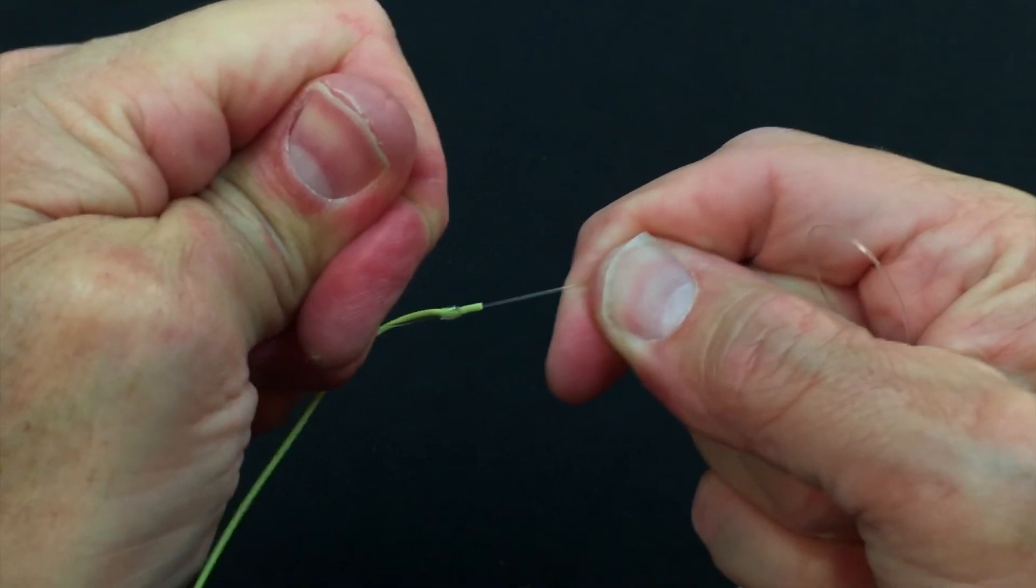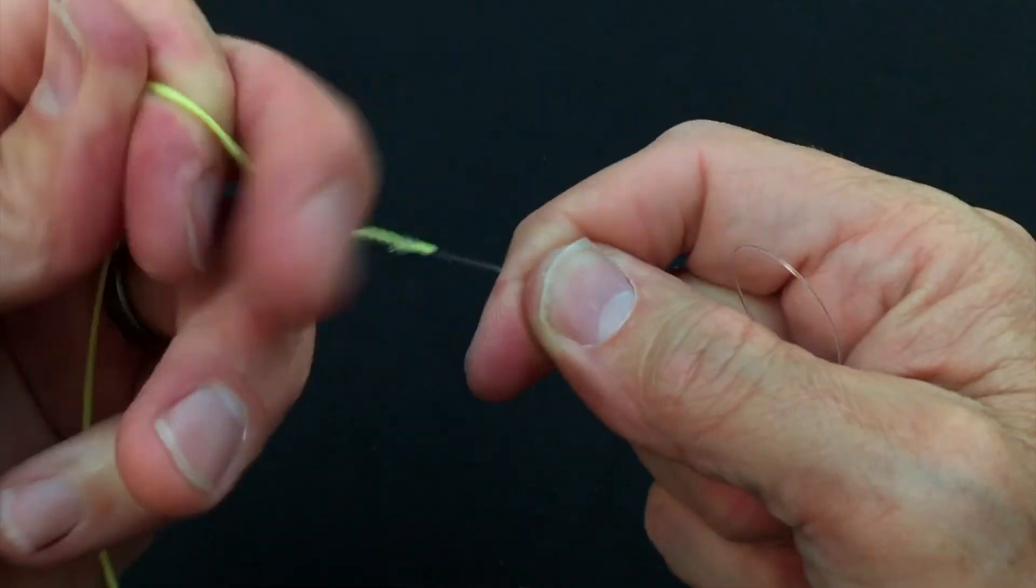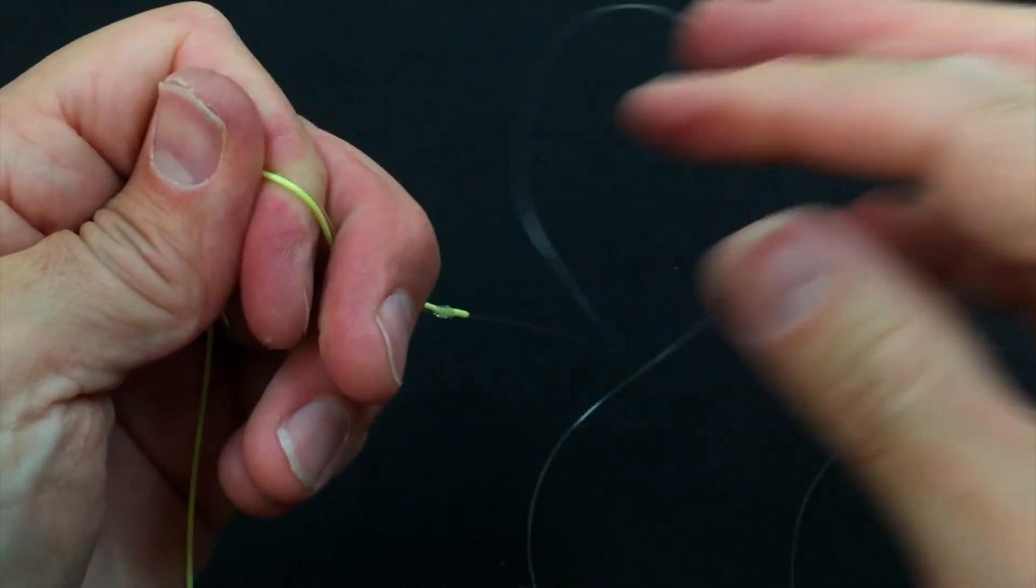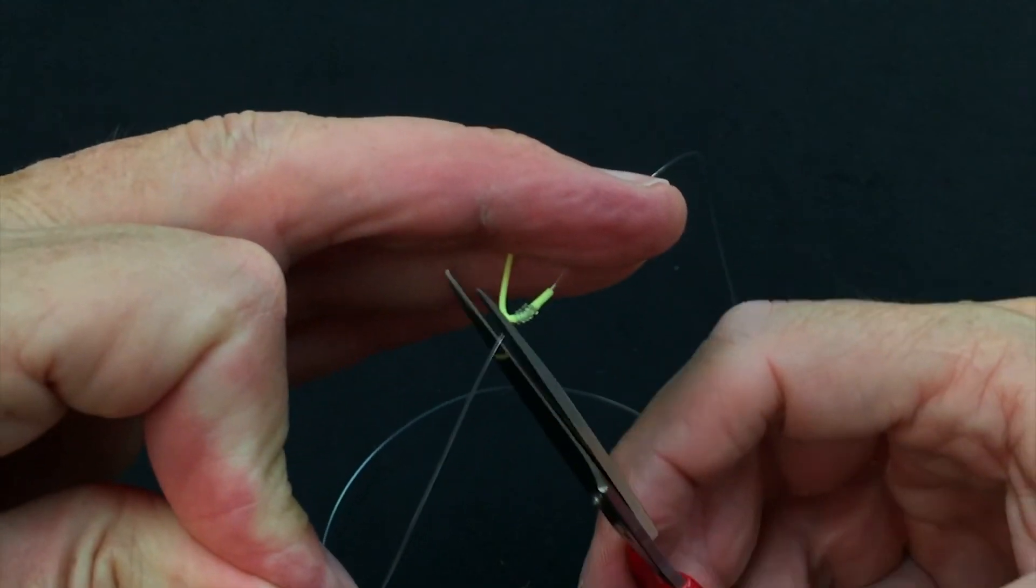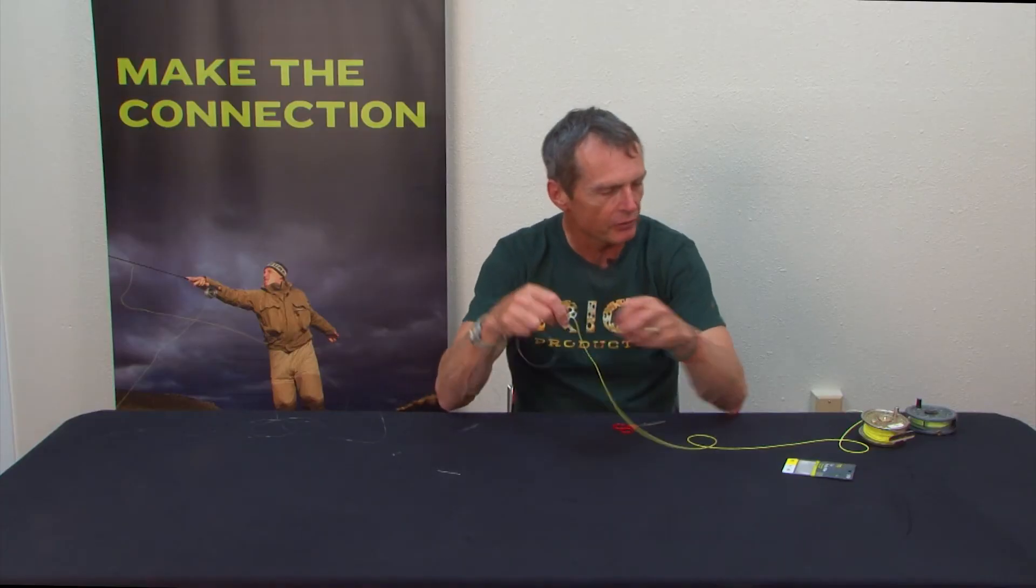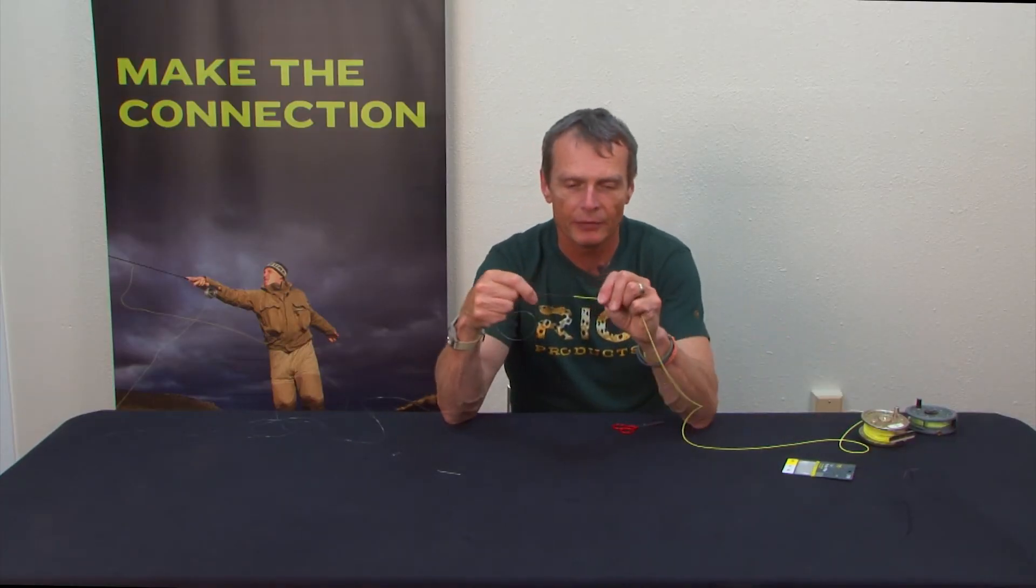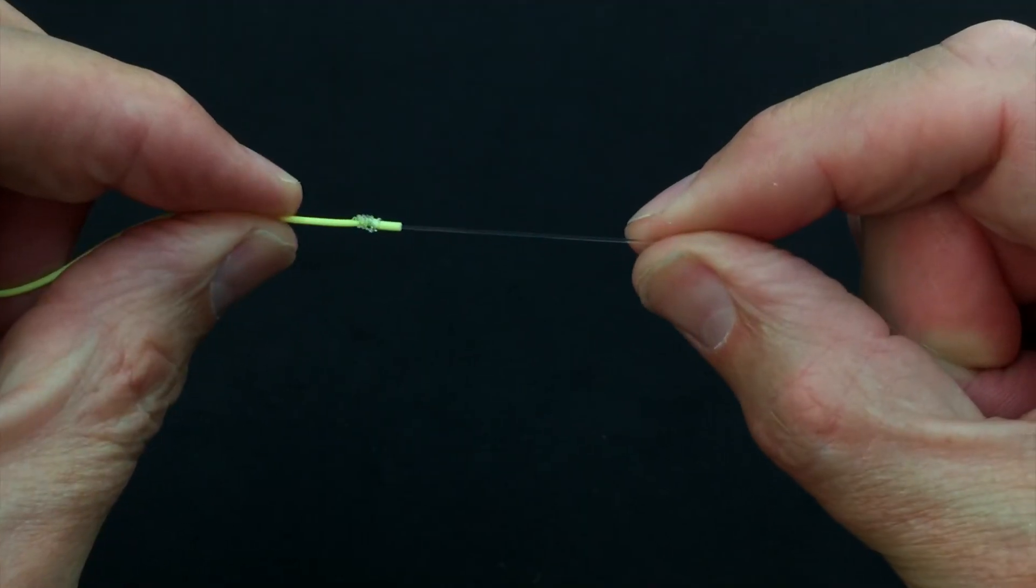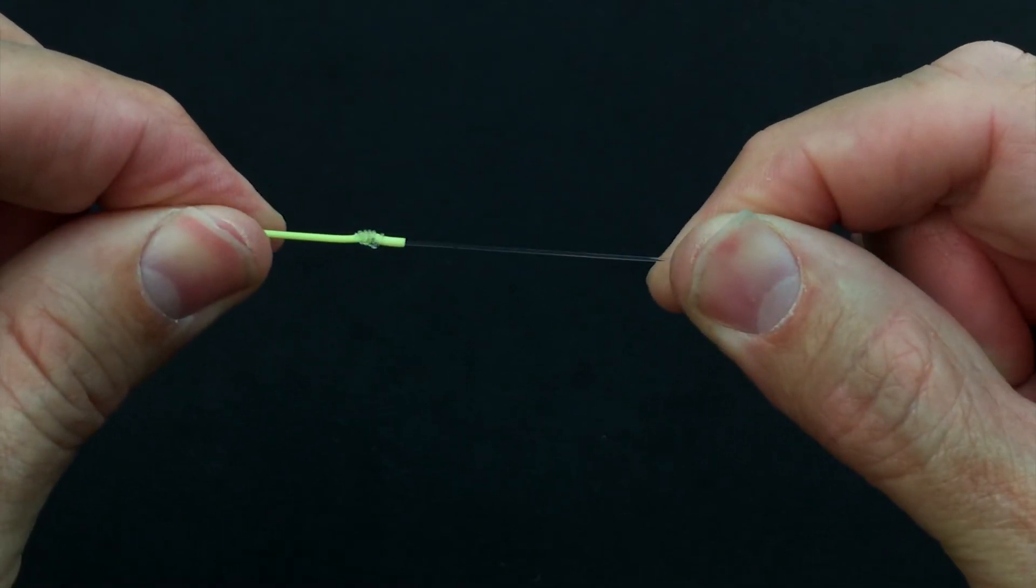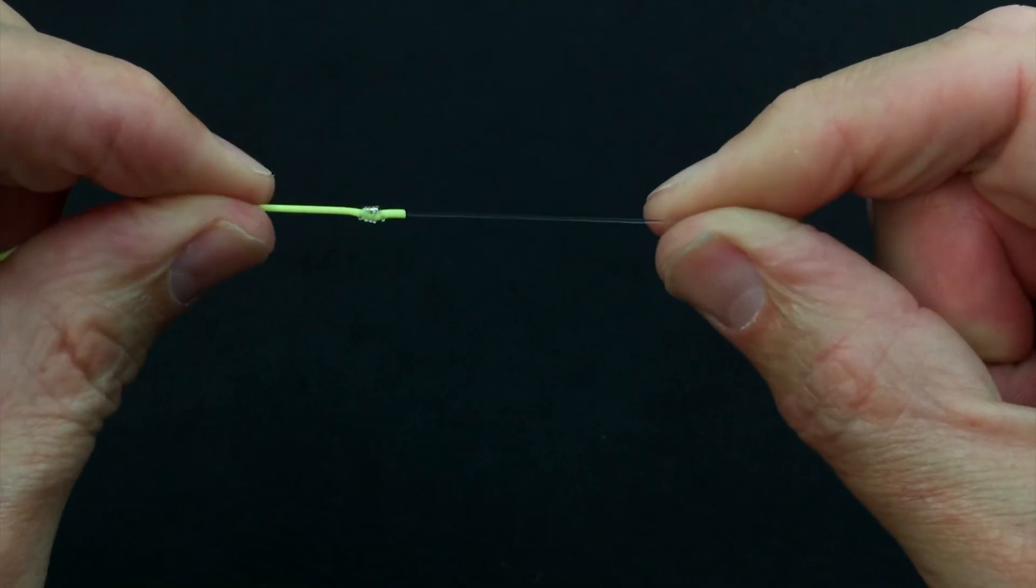And then once I'm happy, I'm just going to reef everything down, pull everything tight, chop off the tag. A lot of people use the nail knot for this, rather than the needle nail. The difference between the nail knot and the needle nail, I'm going to show you here. You can see with this one, the needle, or the needle nail as this can be called, the leader comes out of the center of the fly line.